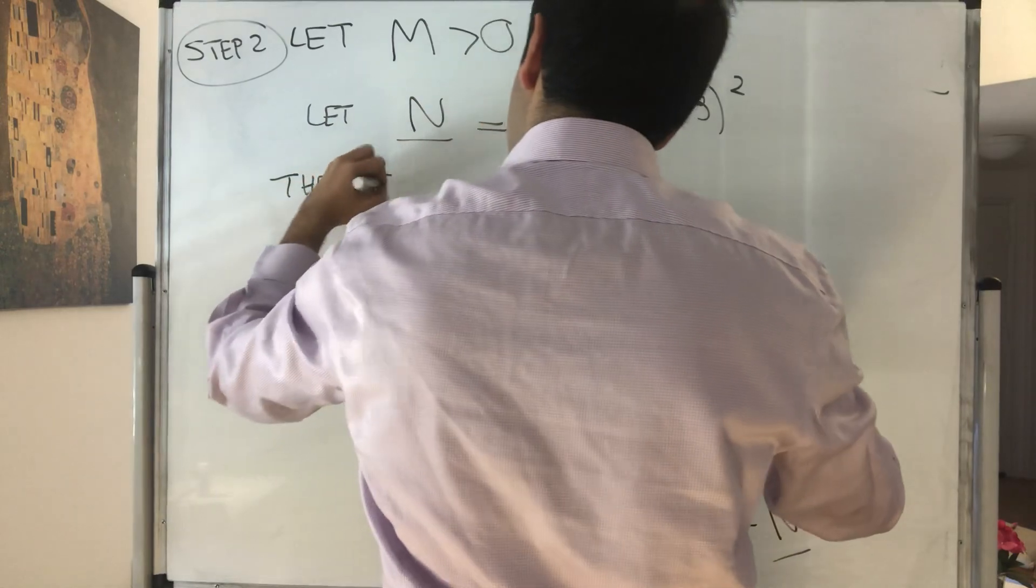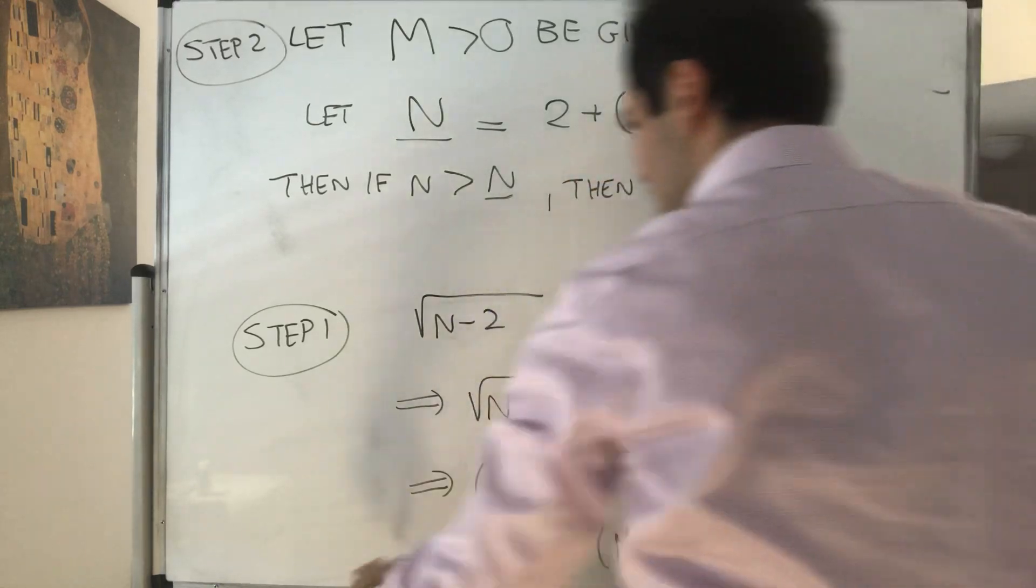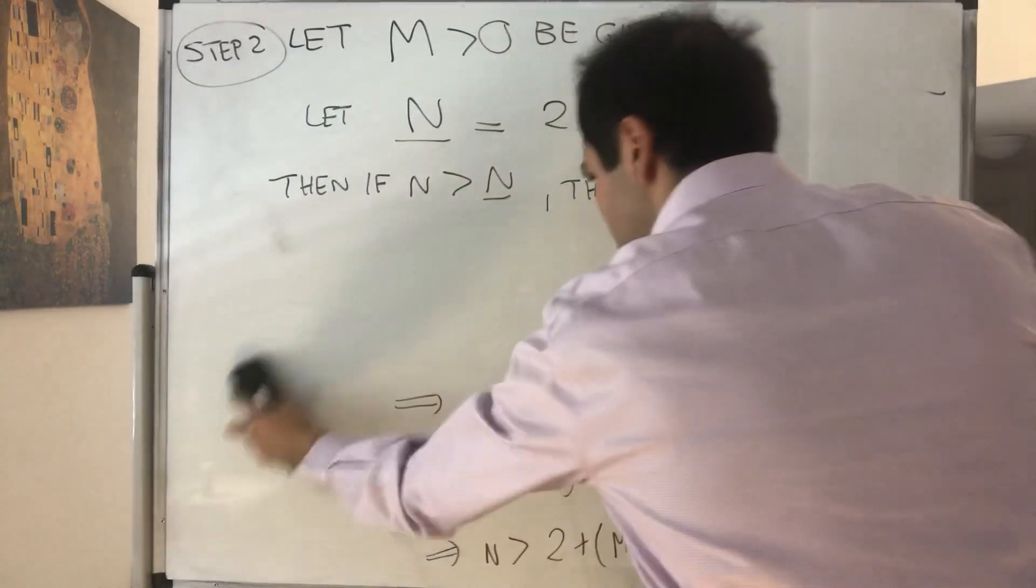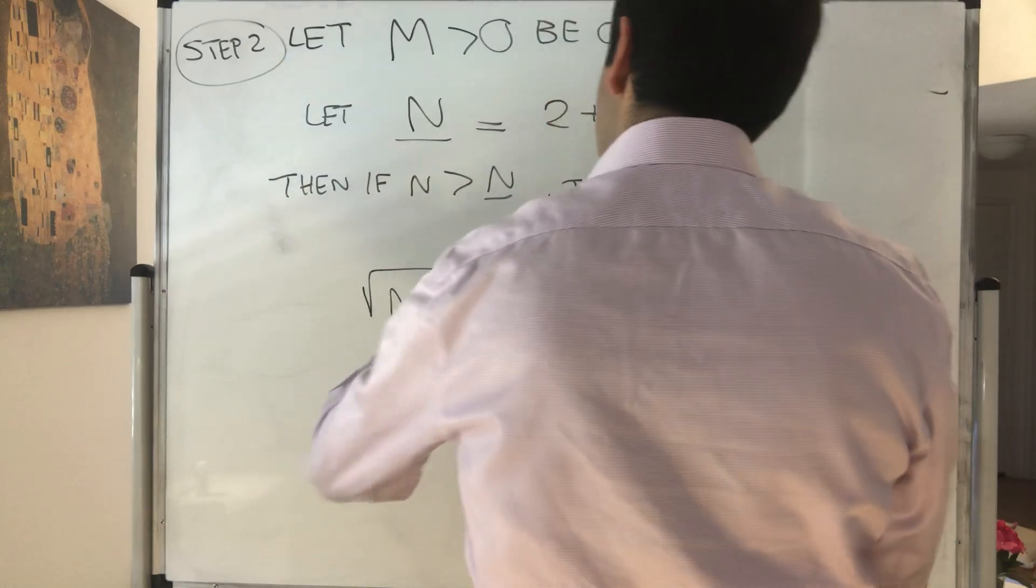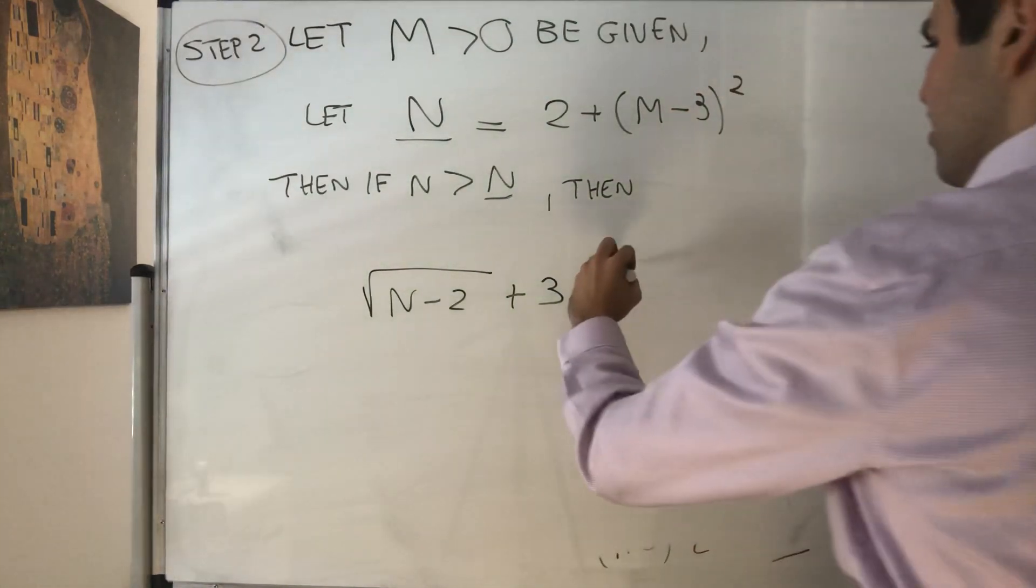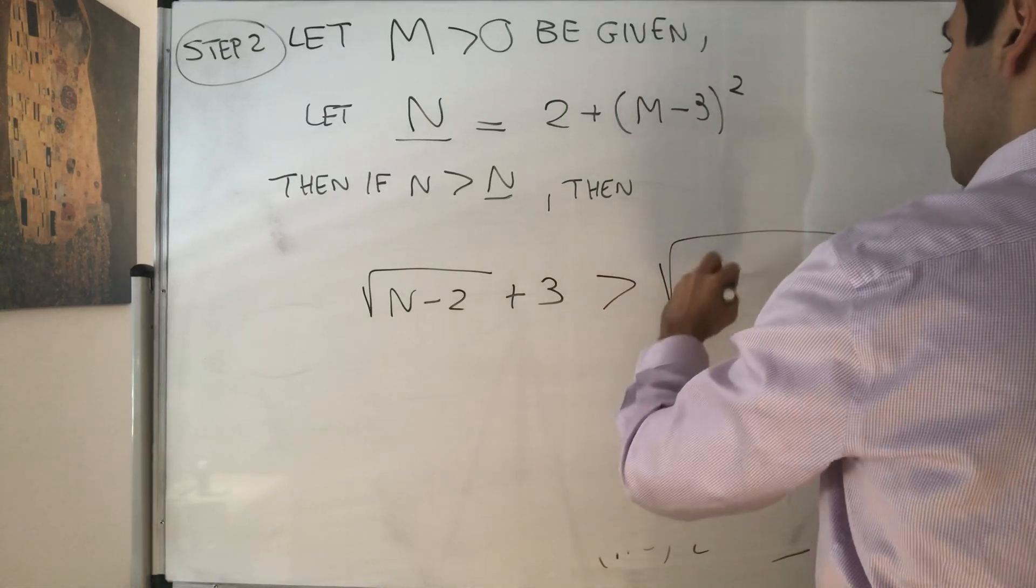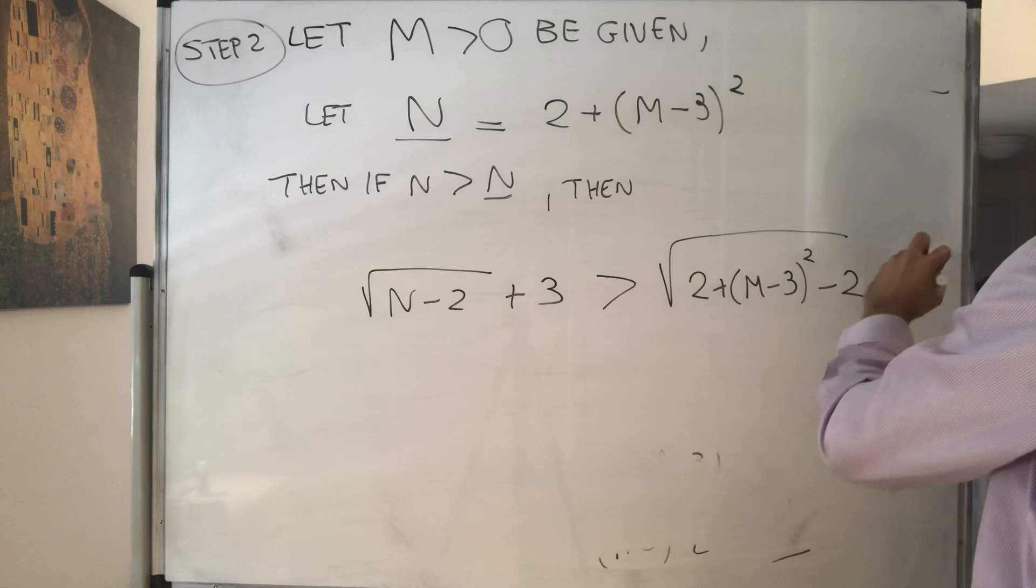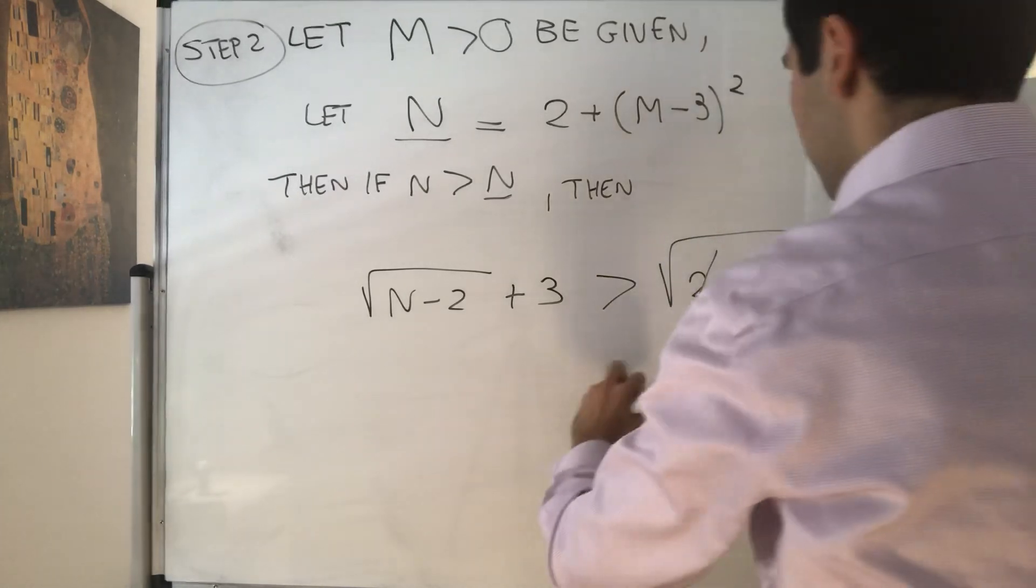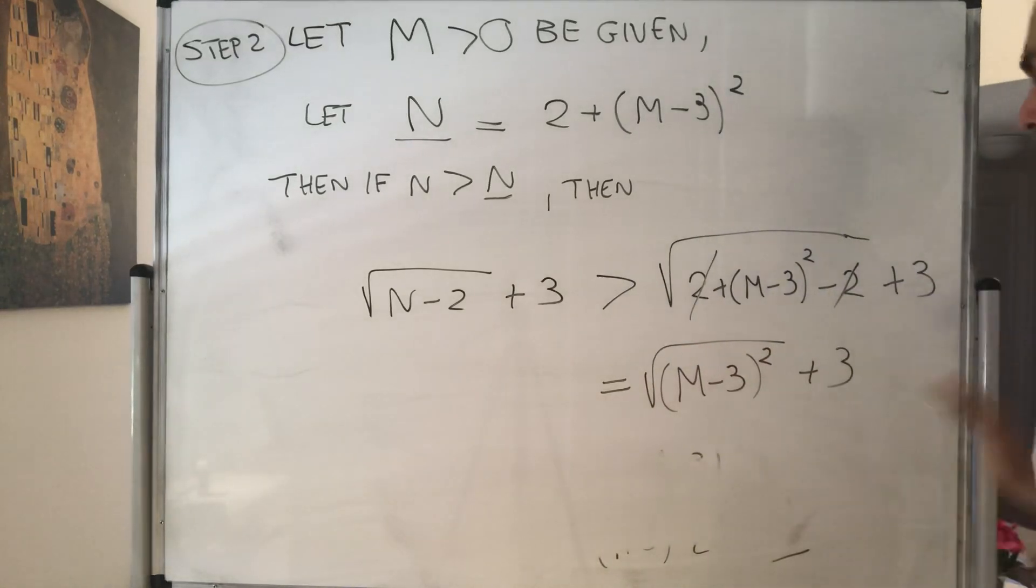Then, if n is greater than capital N, then let's see our square root, so the stuff we want to show, square root of n minus 2 plus 3, well, that becomes bigger than square root of 2 plus m minus 3 squared minus 2 plus 3, and that becomes square root of m minus 3 squared plus 3, and well, this becomes absolute value of m minus 3.